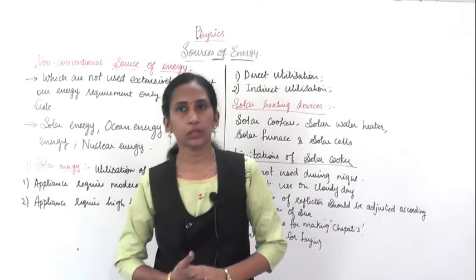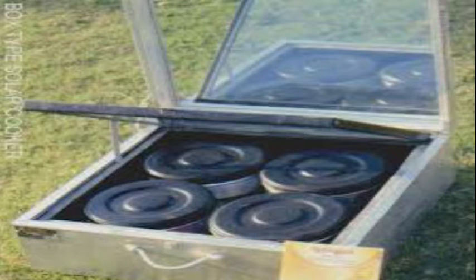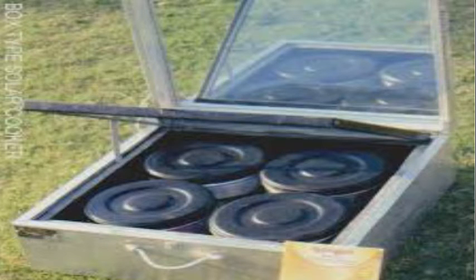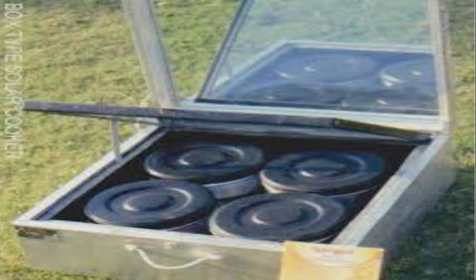Solar energy is used in solar cookers. A solar cooker is a device which utilizes solar energy for cooking food materials. It consists of — see the diagram — an insulated wooden box painted black from the inner side. The lid of the box is provided with a plane mirror reflector. You can see the reflector and the glass sheet. The food to be cooked is placed in a metal container painted black from the outer side and kept in the box. The container is covered with a glass sheet.